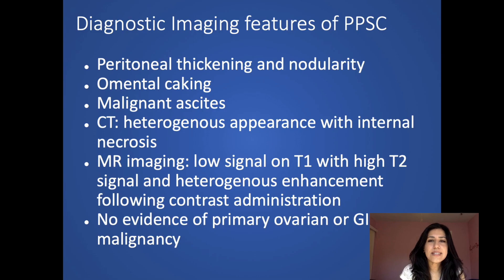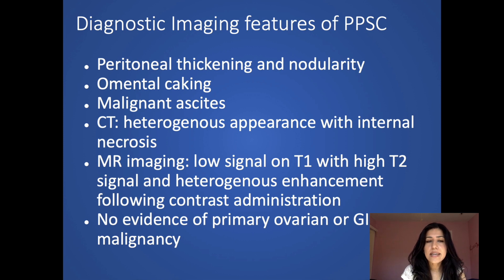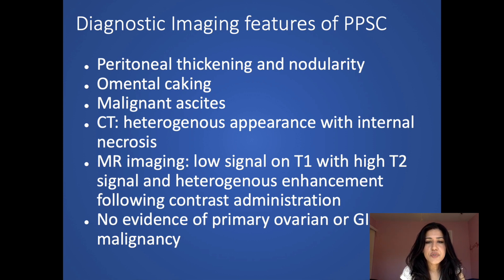The diagnostic imaging features of primary peritoneal carcinoma include peritoneal thickening and nodularity, omental caking, and malignant ascites. It has a heterogeneous appearance on CT, and is better assessed and characterized on MR, where it shows low signal on T1 and heterogeneous enhancement following contrast administration. There must be no evidence of primary ovarian or GI malignancy.